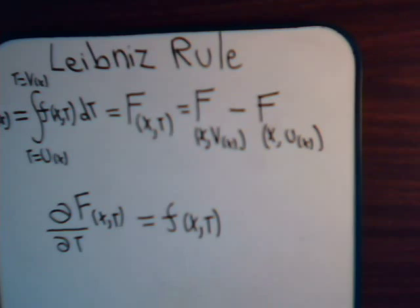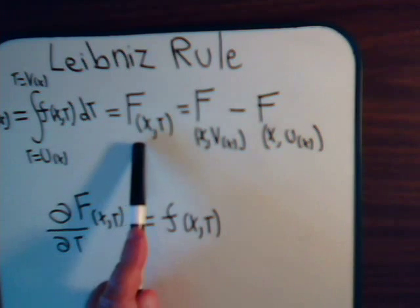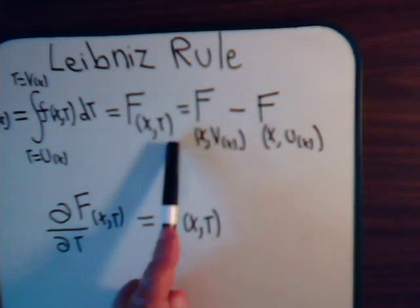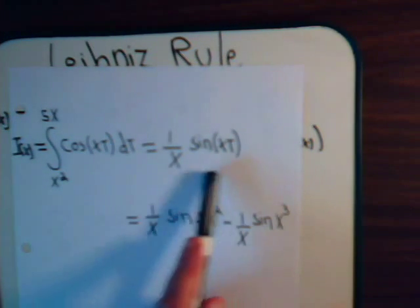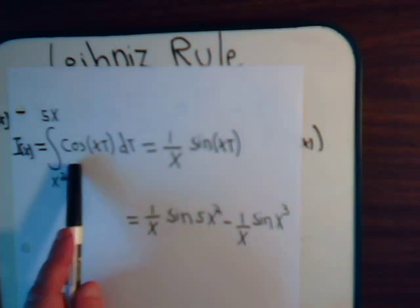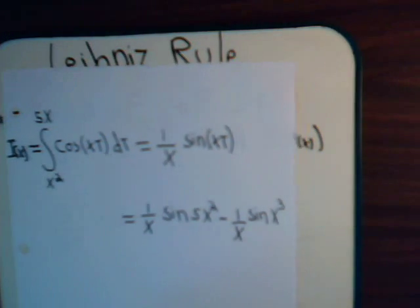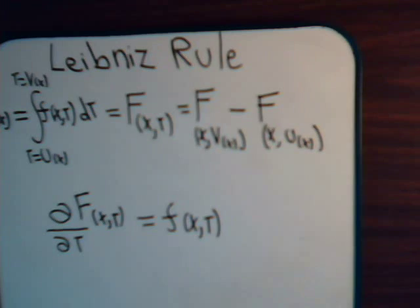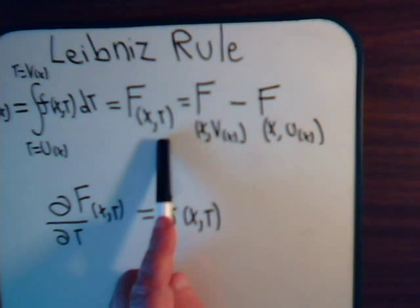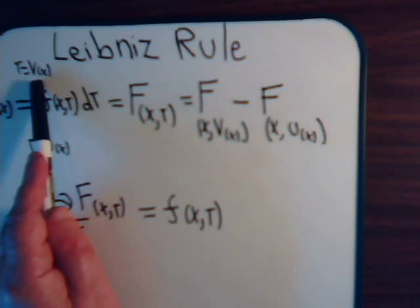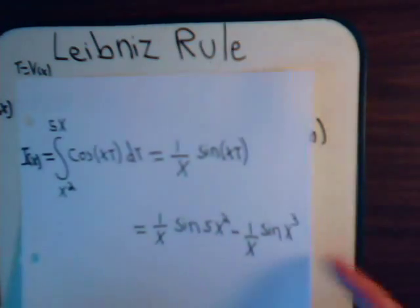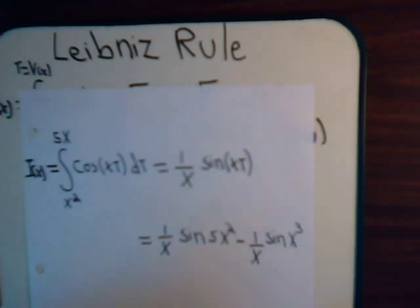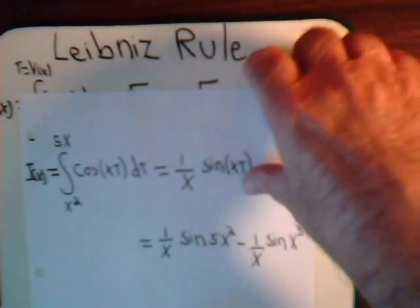We say this gives us some function F(x,t), just as shown here. This is capital F of xt; this is small f of xt. Then we put in the values for t: t is v(x) and t is u(x). In this example, v(x) is 5x and u(x) is x squared.